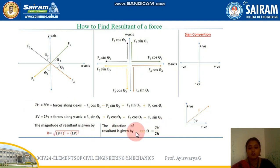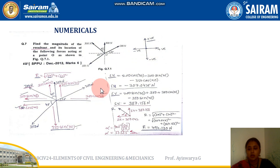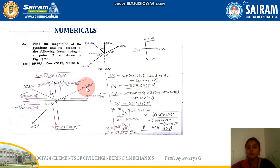We shall now see a few numericals on this topic. Observe numerical one — it has x and y axes and four forces. Sign convention is taken with respect to the graph. You can observe 300 Newton is a vertical force, but 200 Newton, 300 Newton, and 350 Newton are inclined forces — you need to classify and resolve each. For 200 Newton, resolving gives F cosθ and F sinθ, that is 200 cos 30 and 200 sin 30.